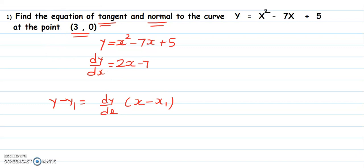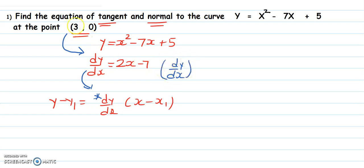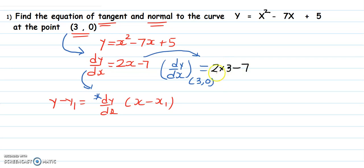Remember — I'm marking with an asterisk — you always put the point into dy by dx first. So dy by dx is 2x minus 7. Calculate dy by dx at point (3, 0): substitute x equals 3, so 2 times 3 minus 7 equals 6 minus 7 equals minus 1. Never ever put dy by dx straight away — always put the point in first, then substitute.